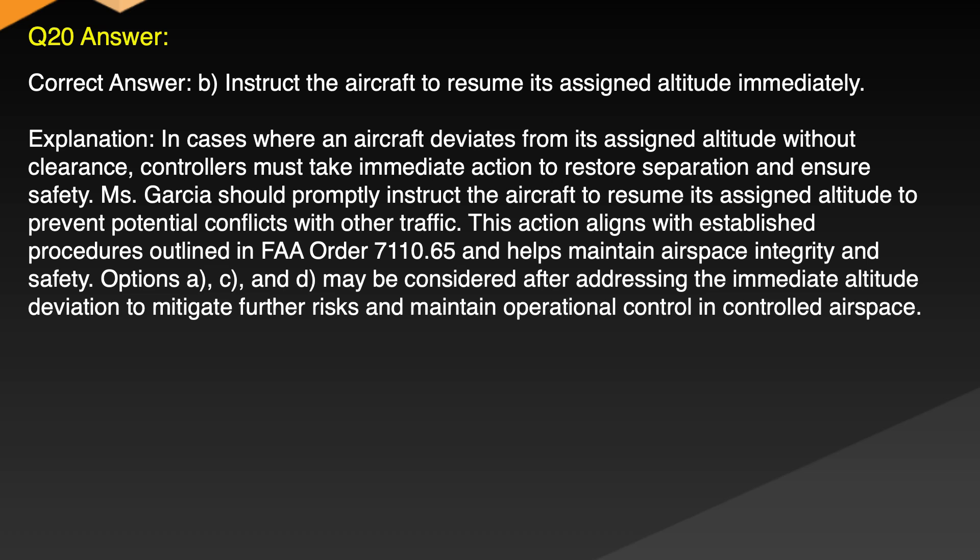Explanation: In cases where an aircraft deviates from its assigned altitude without clearance, controllers must take immediate action to restore separation and ensure safety. Ms. Garcia should promptly instruct the aircraft to resume its assigned altitude to prevent potential conflicts with other traffic. This action aligns with established procedures outlined in FAA Order 7110.65 and helps maintain airspace integrity and safety. Options A, C and D may be considered after addressing the immediate altitude deviation to mitigate further risks and maintain operational control in controlled airspace.